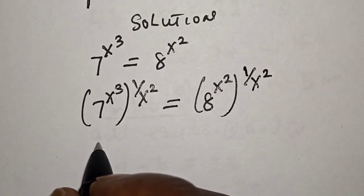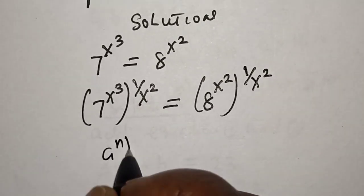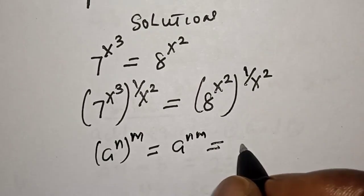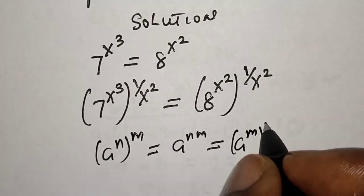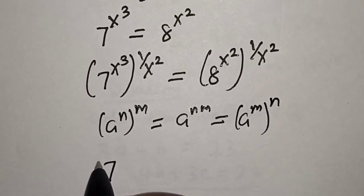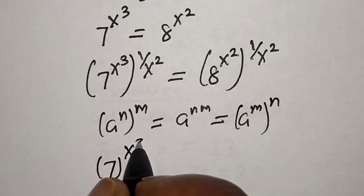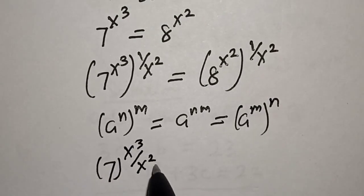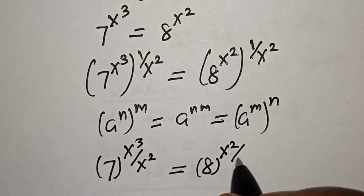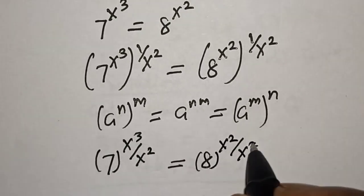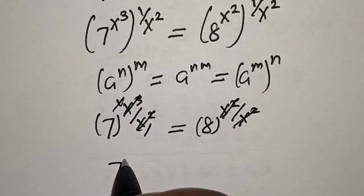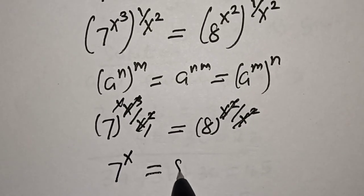Take note of this exponential rule: a raised to power n raised to power m is equal to a raised to power n times m. This is also equal to a raised to power m raised to power n. Then this becomes 7 raised to power s cubed over s squared is equal to 8 raised to power s squared over s squared. So s squared cancels, and we have 7 raised to power s is equal to 8.